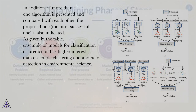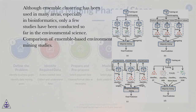As given in the table, ensemble of models for classification or prediction has higher interest than ensemble clustering and anomaly detection in environmental science. Although ensemble clustering has been used in many areas, especially in bioinformatics, only a few studies have been conducted so far in the environmental science.